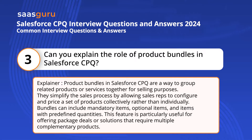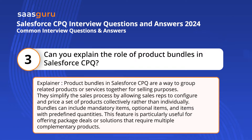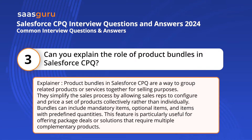They simplify the sales process by allowing sales reps to configure and price a set of products collectively rather than individually. Bundles can include mandatory items, optional items, and items with predefined quantities. This feature is particularly useful for offering package deals or solutions that require multiple complementary products.